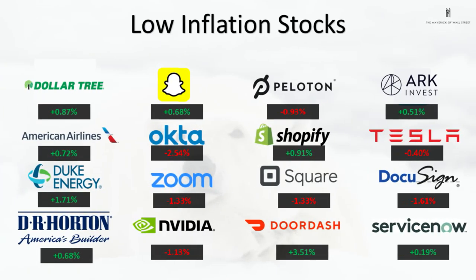What about the disinflationary stocks? The high-multiple stocks — Okta, Zoom, Nvidia, Square, Peloton — all underperforming today. Some high-multiple names like Shopify and Snapchat are outperforming today, and notably DoorDash — which had particular news: a contract with Albertsons to deliver groceries, which the market liked, sending DoorDash significantly higher.